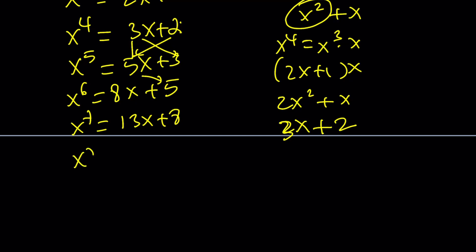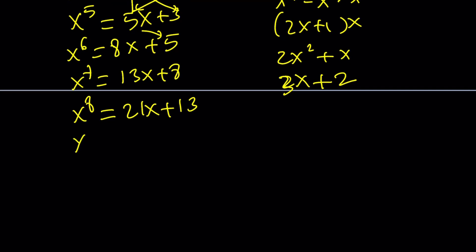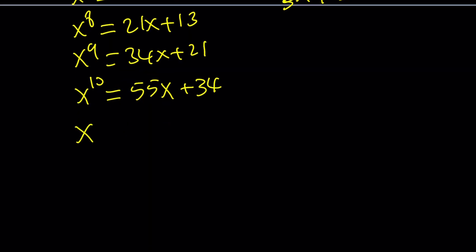x to the eighth is 21x plus 13. And we're almost there. x to the ninth is 34x plus 21. You recognize this? These are the Fibonacci numbers. And x to the tenth is 55x plus 34. Notice we're so close to x to the power 11, which is going to be 89x plus 55. We got it.